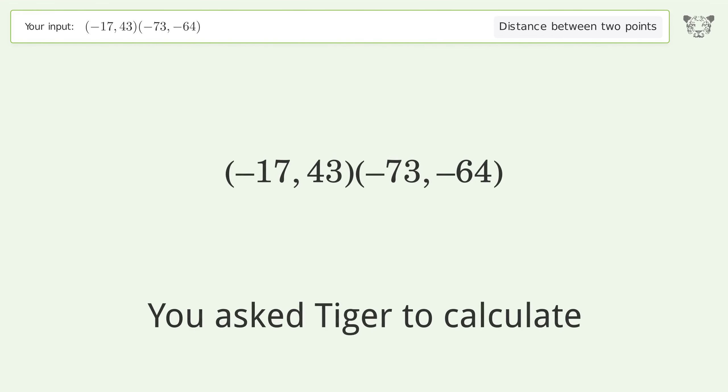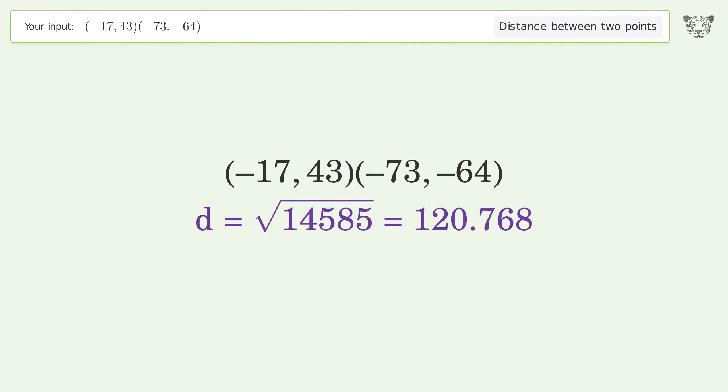You asked Tiger to calculate this. This deals with the distance between two points. The distance between the two points is the square root of 14,585, or 120.768.